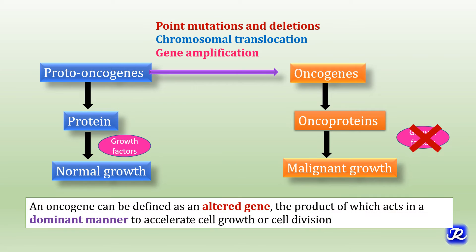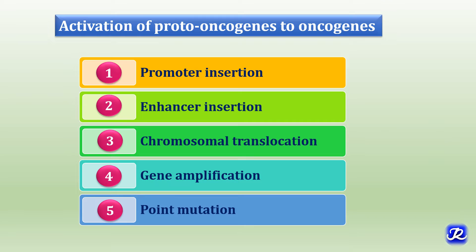Oncogenes can be defined as an altered gene, the product of which acts in a dominant manner to accelerate cell growth or cell division. Proto-oncogenes are activated to form oncogenes by various mechanisms like promoter insertion, enhancer insertion, chromosomal translocation, gene amplification, and point mutation.